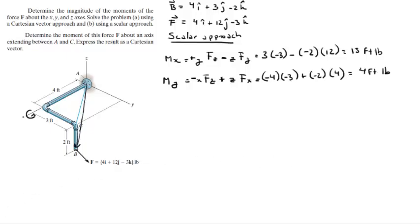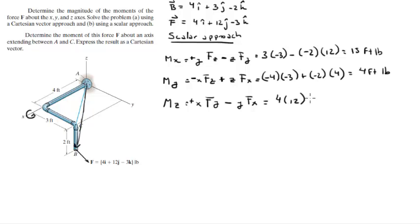For the moment about the z-axis, we need the x and y components. By the right-hand rule, one is positive and the other is negative. Replacing the numbers: 4 times 12 minus 3 times 4 comes out to be 36 foot-pounds. So the scalar approach gives us Mx = 15, My = 4, and Mz = 36 foot-pounds for this assembly.